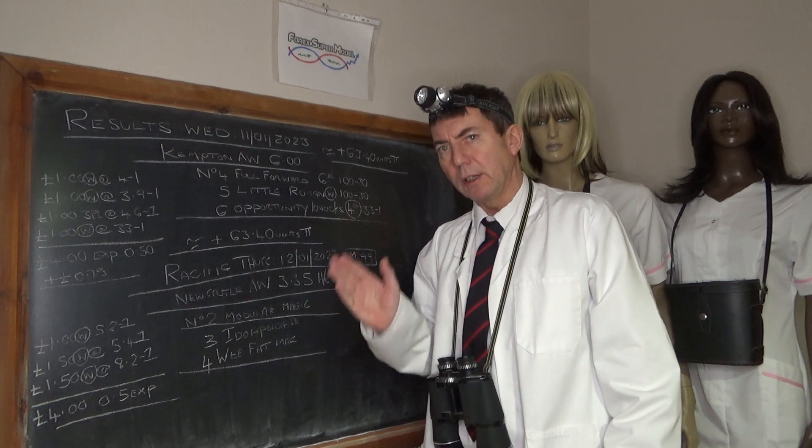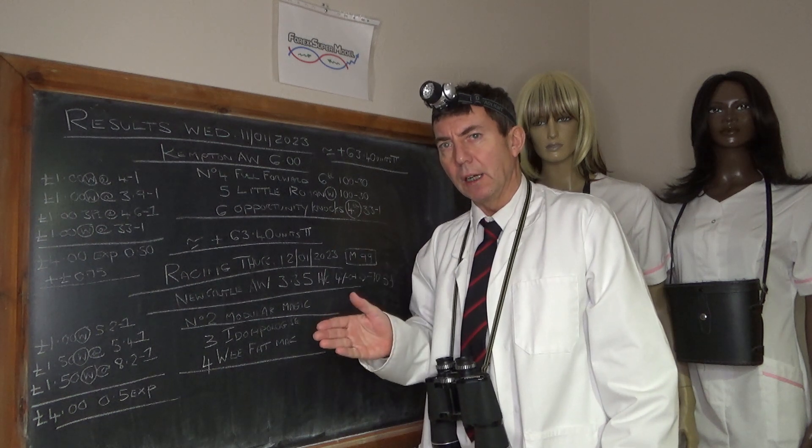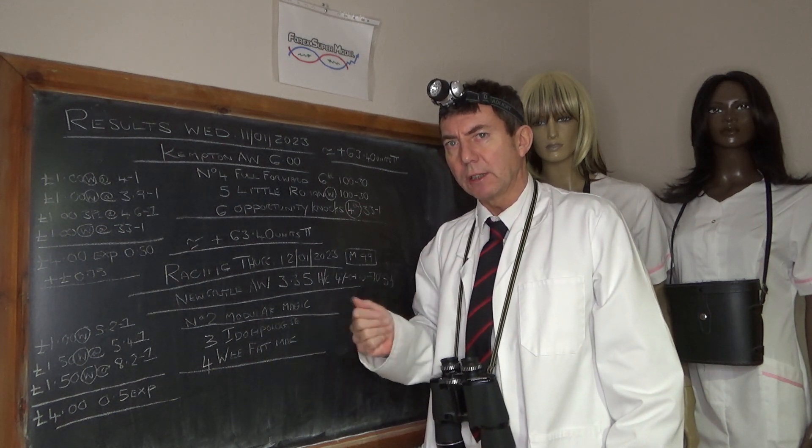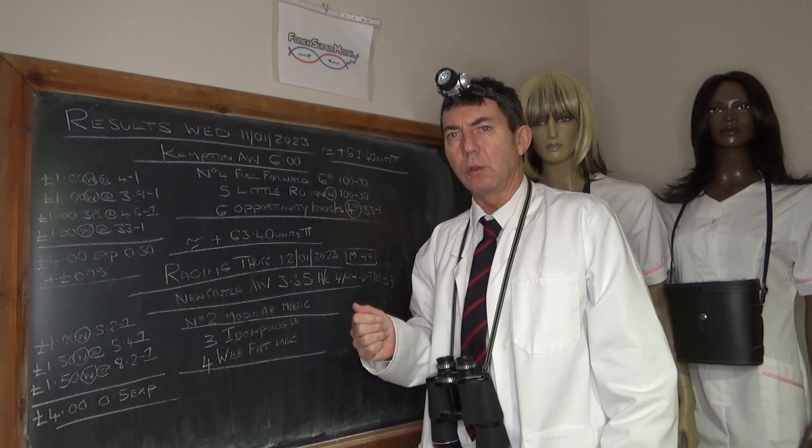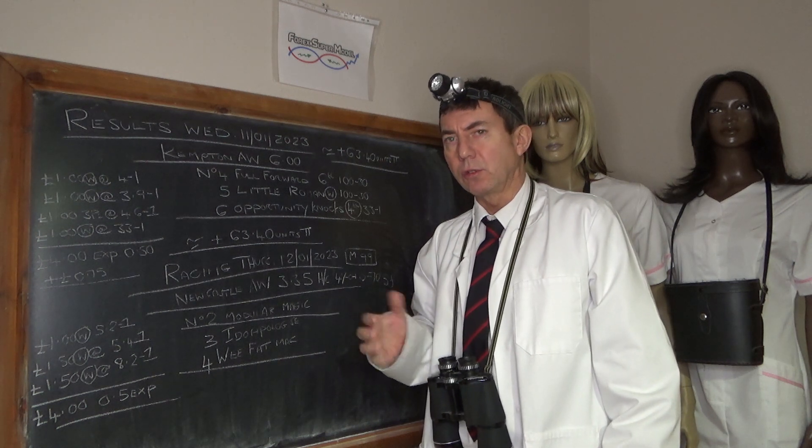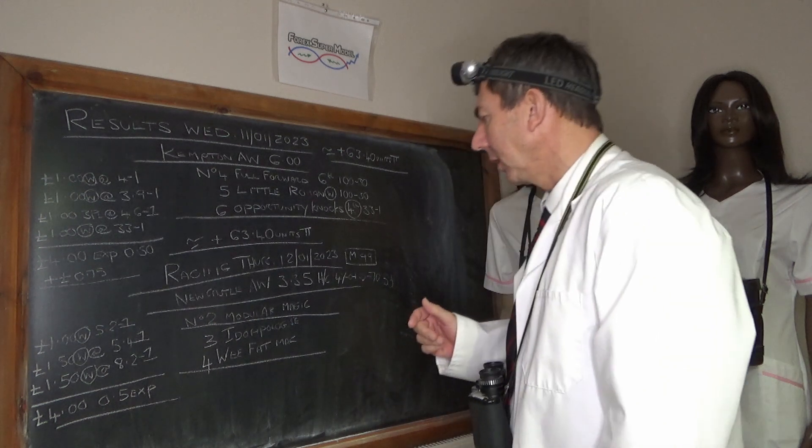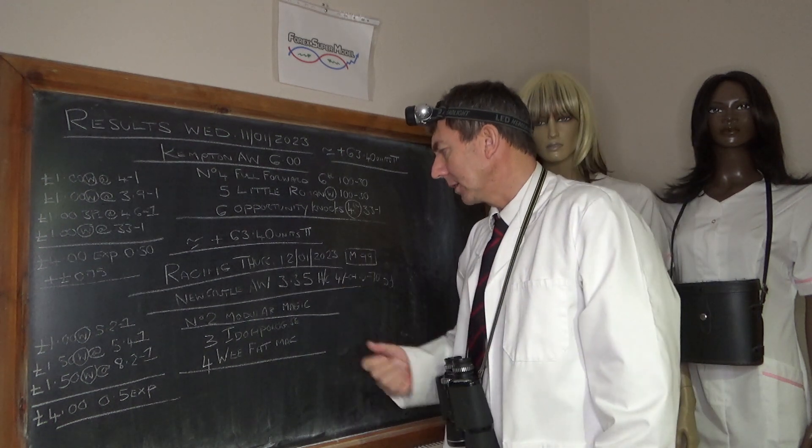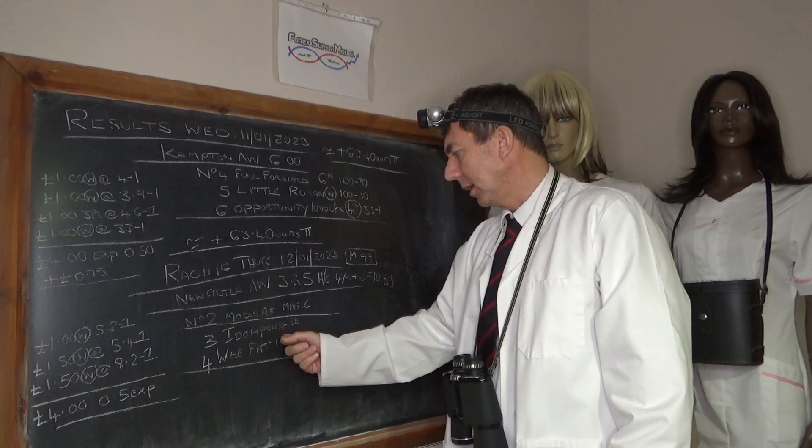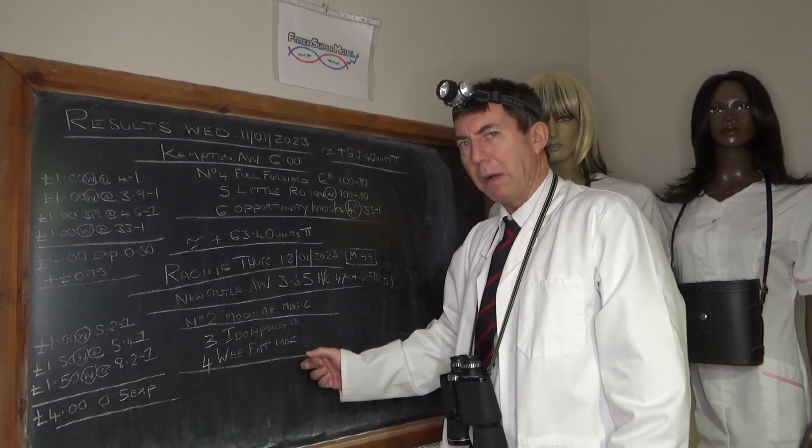So what it will do is it'll either win or it'll set the race up for horses that are stalking just behind this pace and the two that are likely to take advantage of that if that doesn't happen are number three I Do Apologise and number four WeFat Mac.